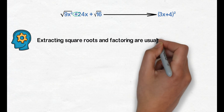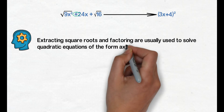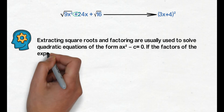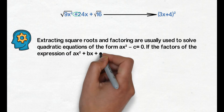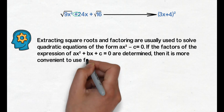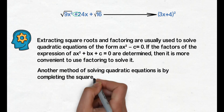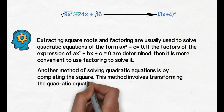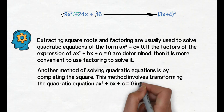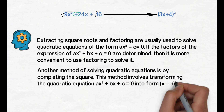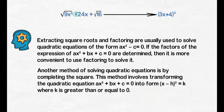Extracting square roots and factoring are usually used to solve quadratic equations of the form ax square minus c equals 0. If the factors of ax square plus bx plus c equals 0 are determined, then it is more convenient to use factoring. Another method of solving quadratic equations is by completing the square, which involves transforming ax square plus bx plus c equals 0 into the form quantity x minus h square equals k, where k is greater than or equal to 0. Merong mga quadratic equation na hindi natin kayang i-factor, kaya magandang method itong completing the square.